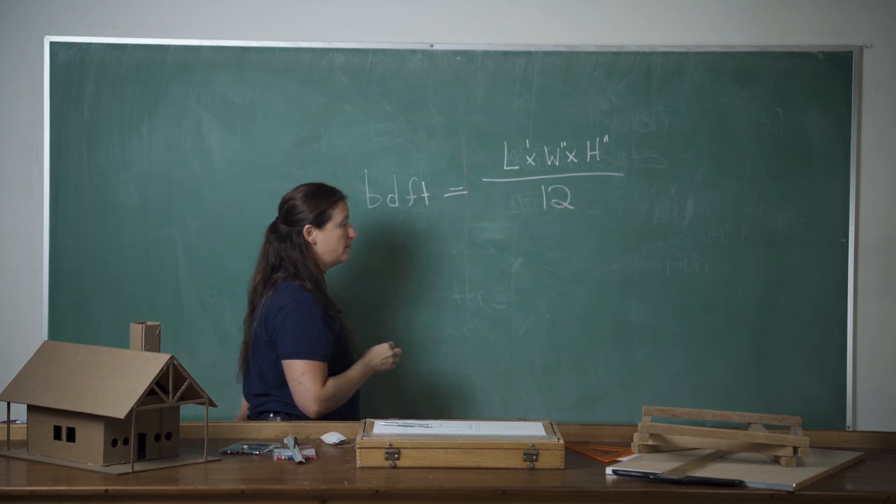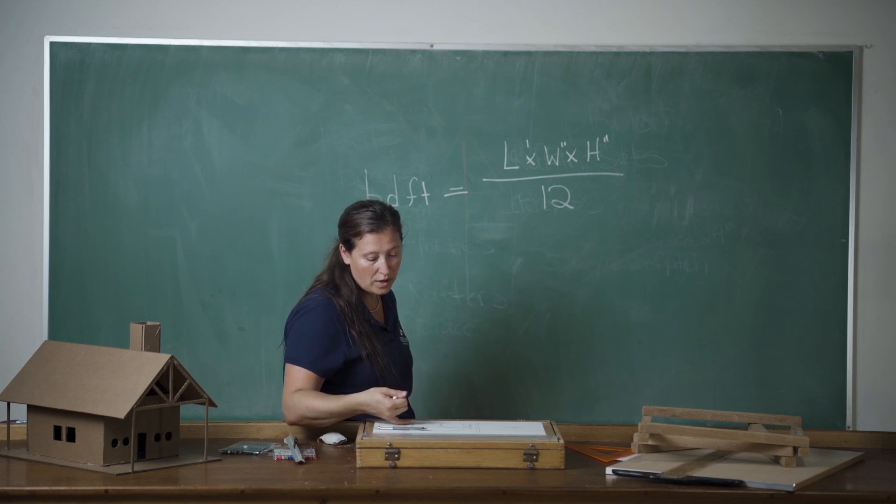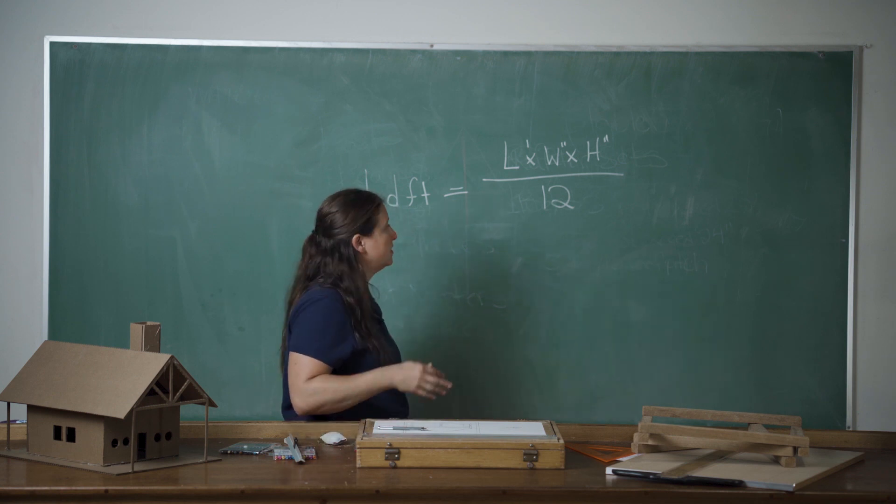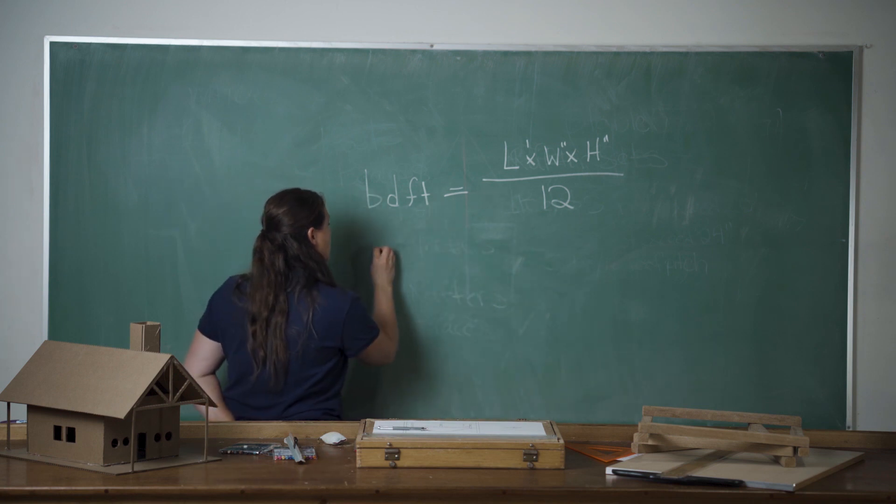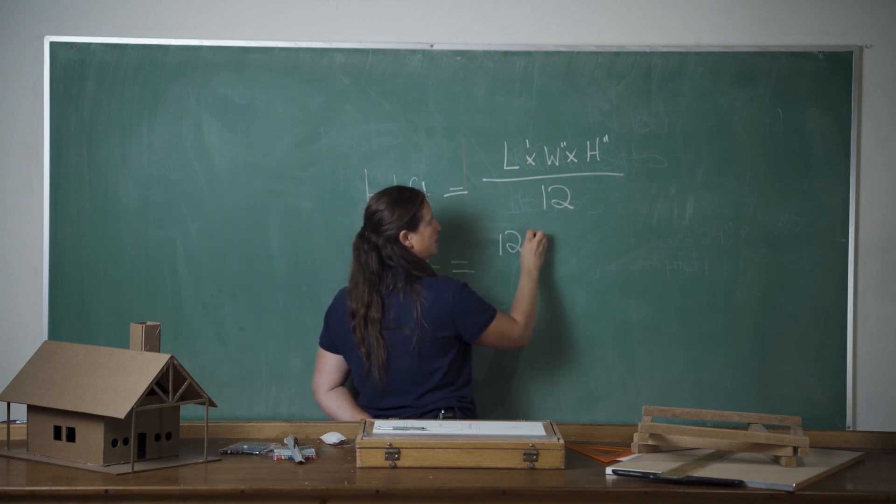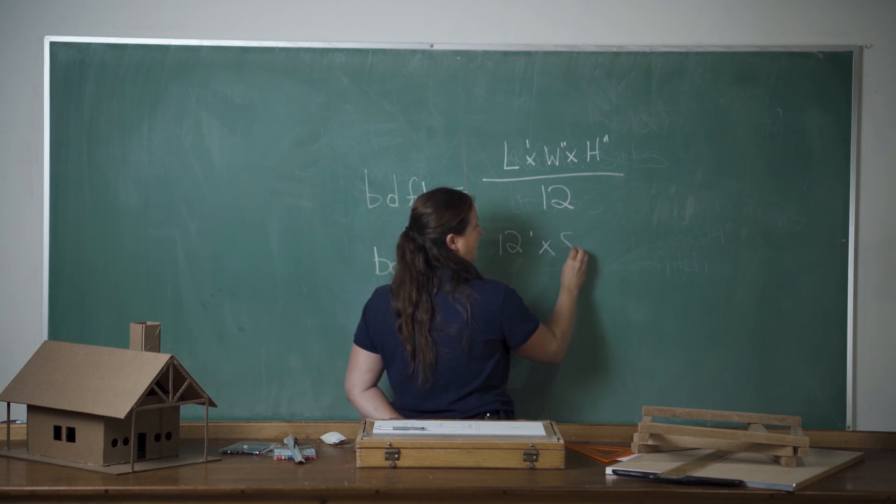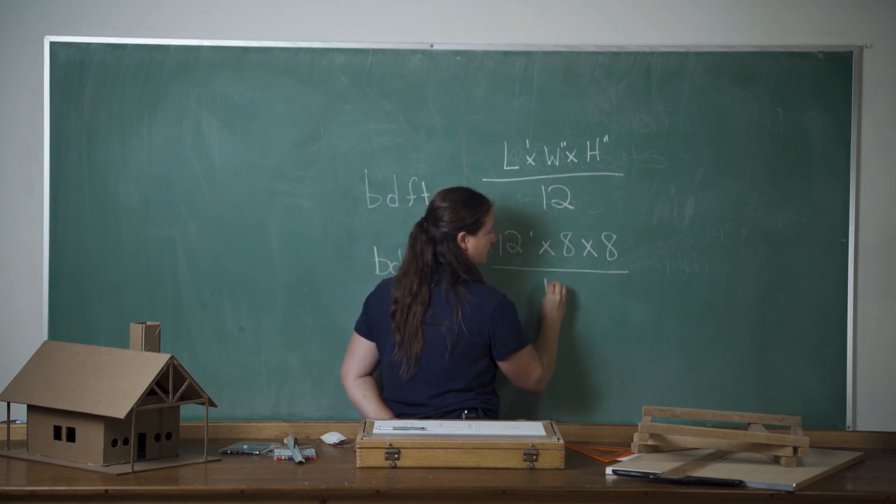So an example of that, let's go ahead and just price one of our taller posts. So that post's overall height is a minimum of 12 feet. So we'll say it's a 12 footer. So our formula would look like this: 12 feet times, and it's an eight by eight, eight times eight, all divided by 12.